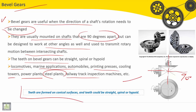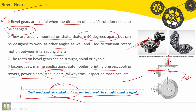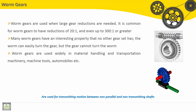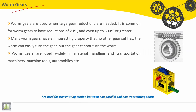Teeth are formed on conical surfaces, as shown here. Here it is conical surfaces. Teeth could be straight, spiral, or hypoid. Let's move now to present some features of worm gears.